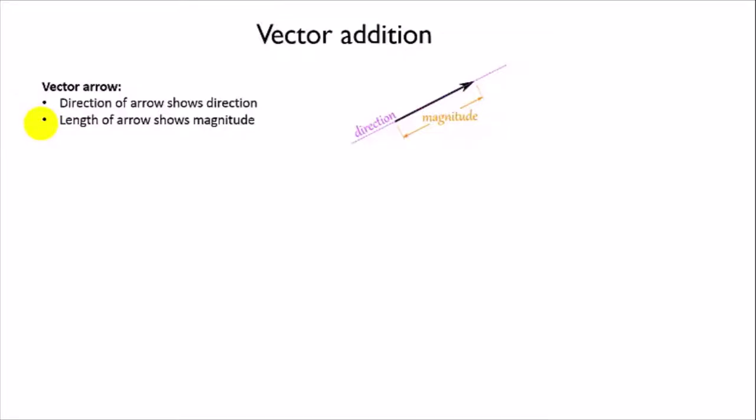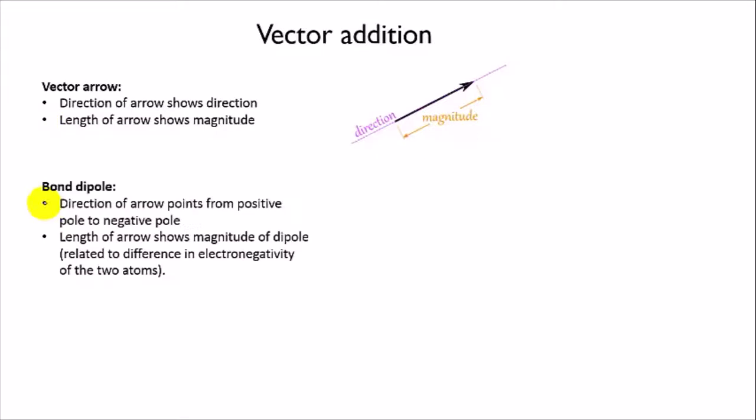If we're talking about forces it's the magnitude of the force. For us the vector arrow represents a bond dipole, so the direction of the arrow shows you the direction of the dipole which will be along the length of the bond and pointing towards the negative end, while the length of the arrow shows you the magnitude of the dipole. The larger the difference in the electronegativity of the two atoms in the bond, the larger the separation of charge and therefore the larger the dipole.